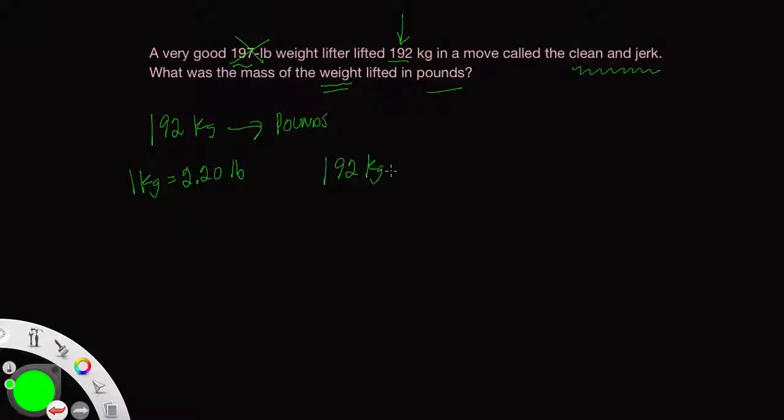Create a conversion factor by putting in the two halves here. We've got kilograms on the bottom, so that's one kilogram, and up on top we have 2.20 pounds.